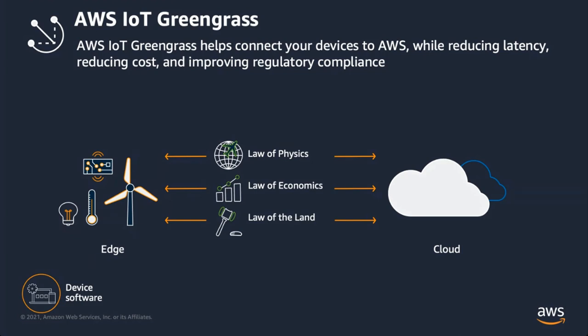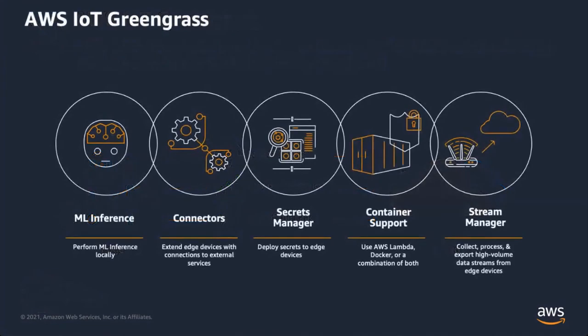AWS IoT Greengrass also helps address the law of the land, which is data sovereignty. If you have situations — either from internal policies or regulatory constraints — where data can't leave a particular location, Greengrass can operate on that data locally. You have full control over where data resides; it can stay on Greengrass or go to the cloud. This edge capability is what we're going to be using to deploy our worker safety solution.